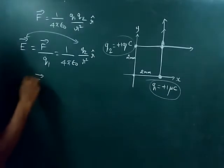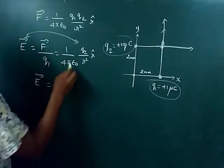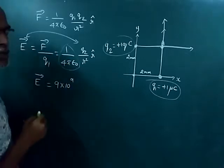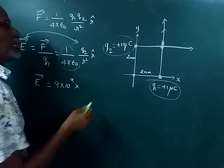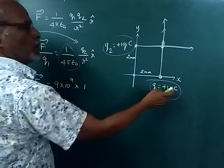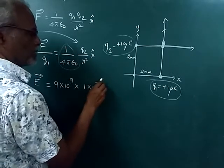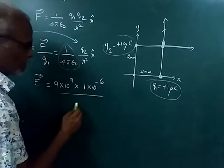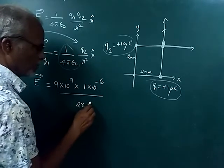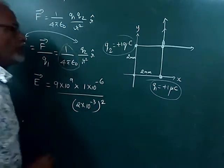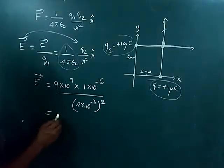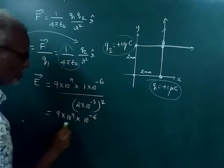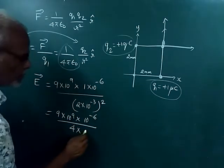The electric field due to q1 is equal to (1 / 4πε₀), whose value is 9 × 10⁹. The charge value is 1 micro Coulomb, which is 1 × 10⁻⁶, divided by distance squared. The distance is 2 mm, that is 2 × 10⁻³, squared — so divided by 4 × 10⁻⁶. This gives us 9 × 10⁹ × 10⁻⁶ divided by 4 × 10⁻⁶.